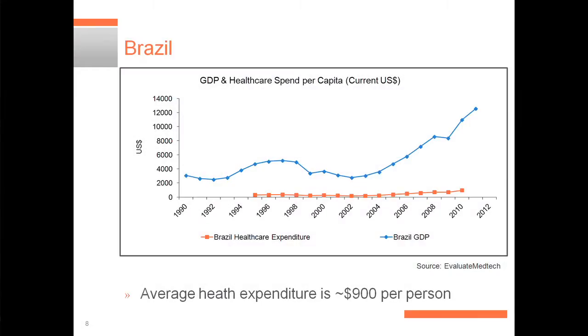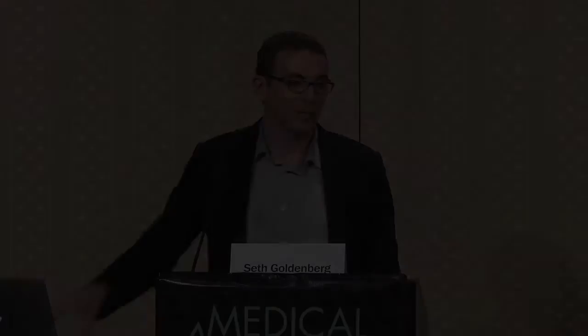Similar story to Brazil — GDP is rising faster than healthcare expenditures in most of these emerging markets. They want to get rich, get more stable first, and then bring up other standards of living. Healthcare does have a tendency to lag behind.